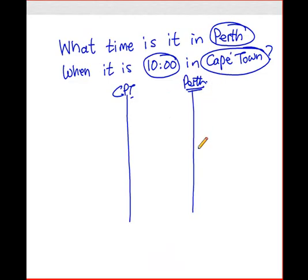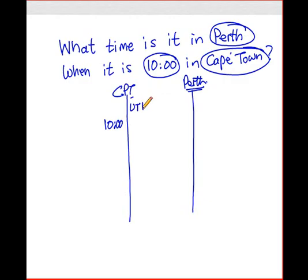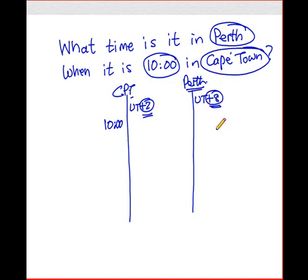The next thing you need to do is to write down all the given information. The first thing is the time at Cape Town — it's 10 o'clock in the morning. Another thing you know about Cape Town is that it is Universal Time plus two, so Cape Town is in the plus two time zone. And if you look on your time zone map, you will see that Perth is Universal Time plus eight — the plus eight time zone.